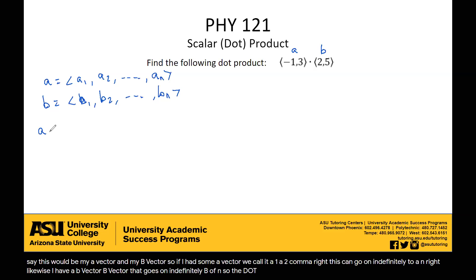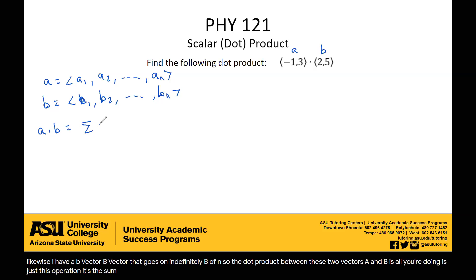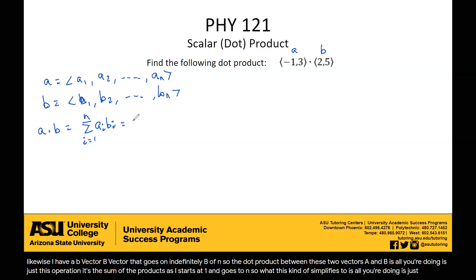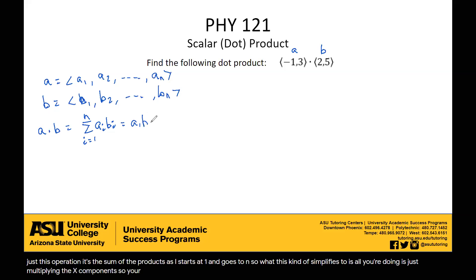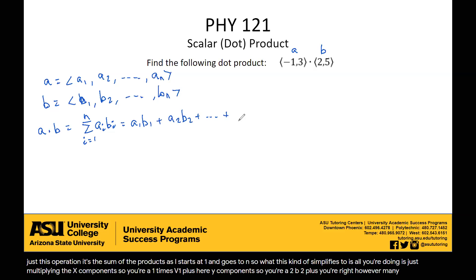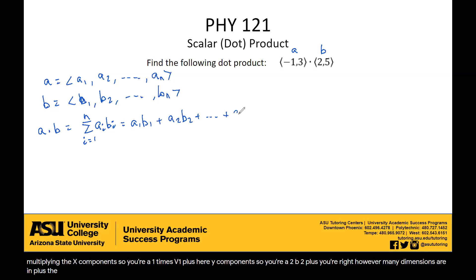So the dot product between these two vectors A and B is just this operation: it's the sum of the products as i starts at 1 and goes to N. What this simplifies to is multiplying the X components — so A1 times B1 — plus your Y components A2 times B2, plus however many dimensions you're in, up to A-N times B-N.